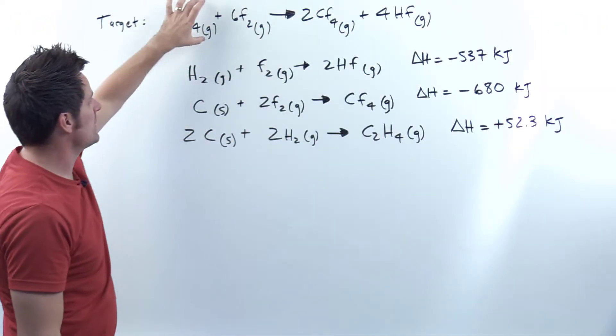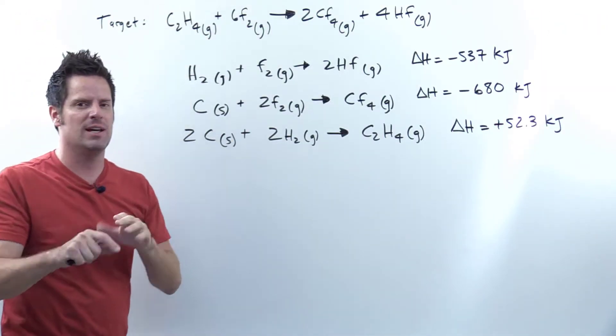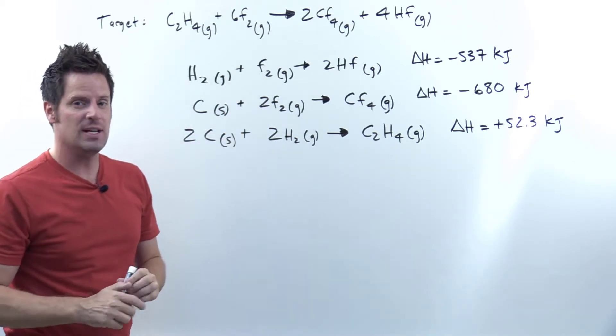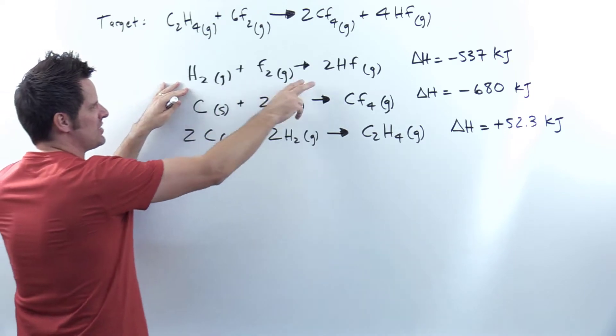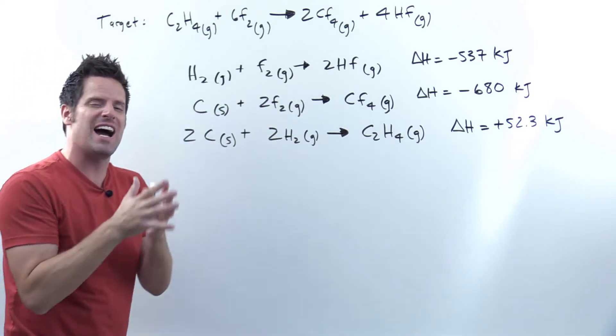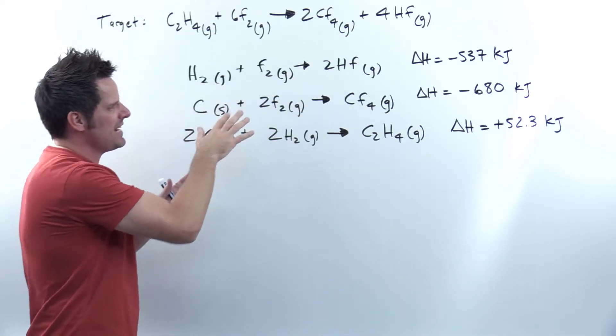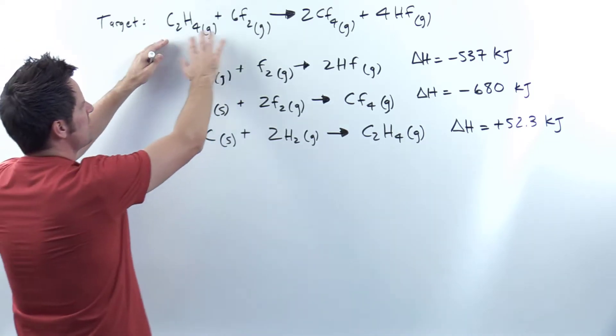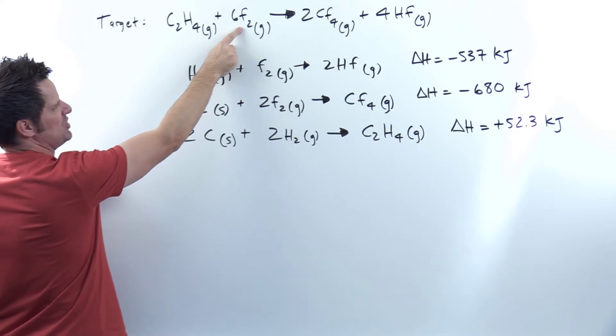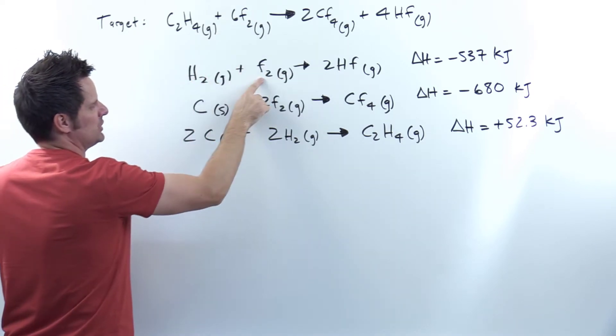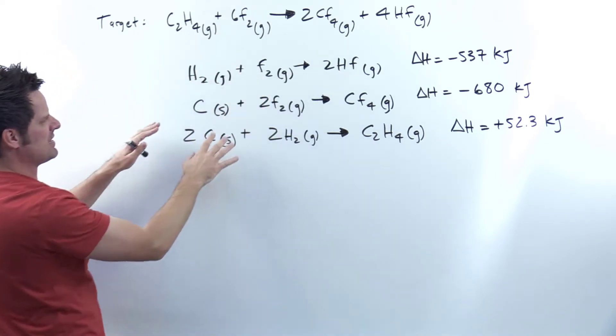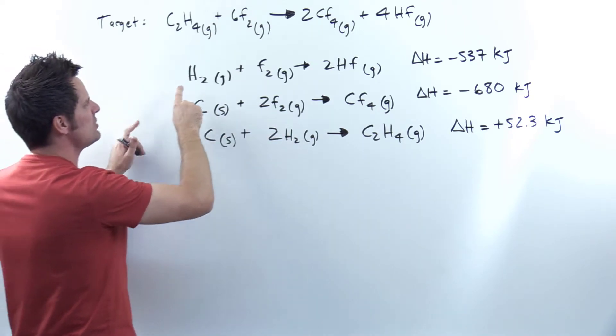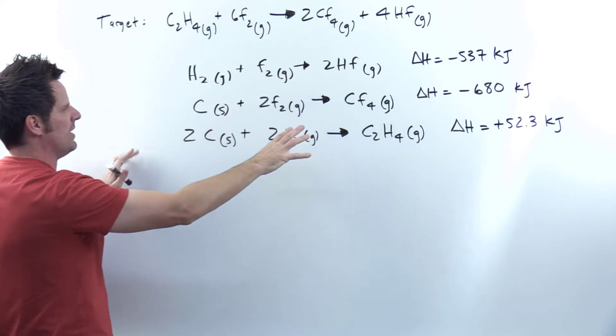The strategy for arriving at a target, more complicated equation from simpler but related chemical equations is to look at each of these simpler equations one at a time and try to identify something in it that is unique to that equation but is also found in the target. So if you look at this target, granted the target has F2 in it, so does this first equation, and that's not really unique because I think there may be F2 somewhere else. Yeah, there's some F2 down here, so that doesn't really help me.